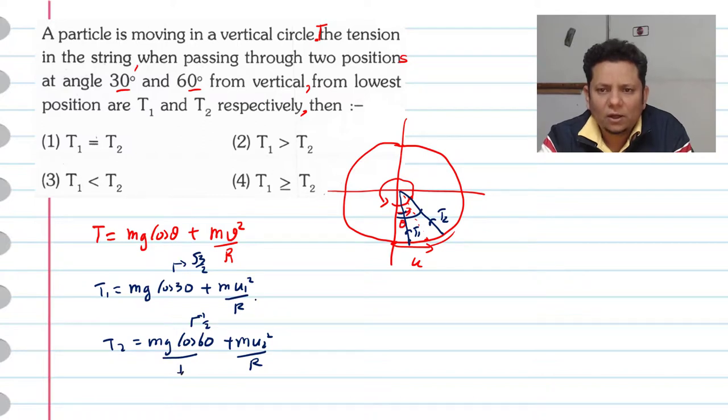And u₁ and u₂ are the particle's velocities. As you go up, the velocity decreases, so u₁ will be greater than u₂ at this location. Hence we can say T₁ will always be greater than T₂. The tension at this location will always be greater.